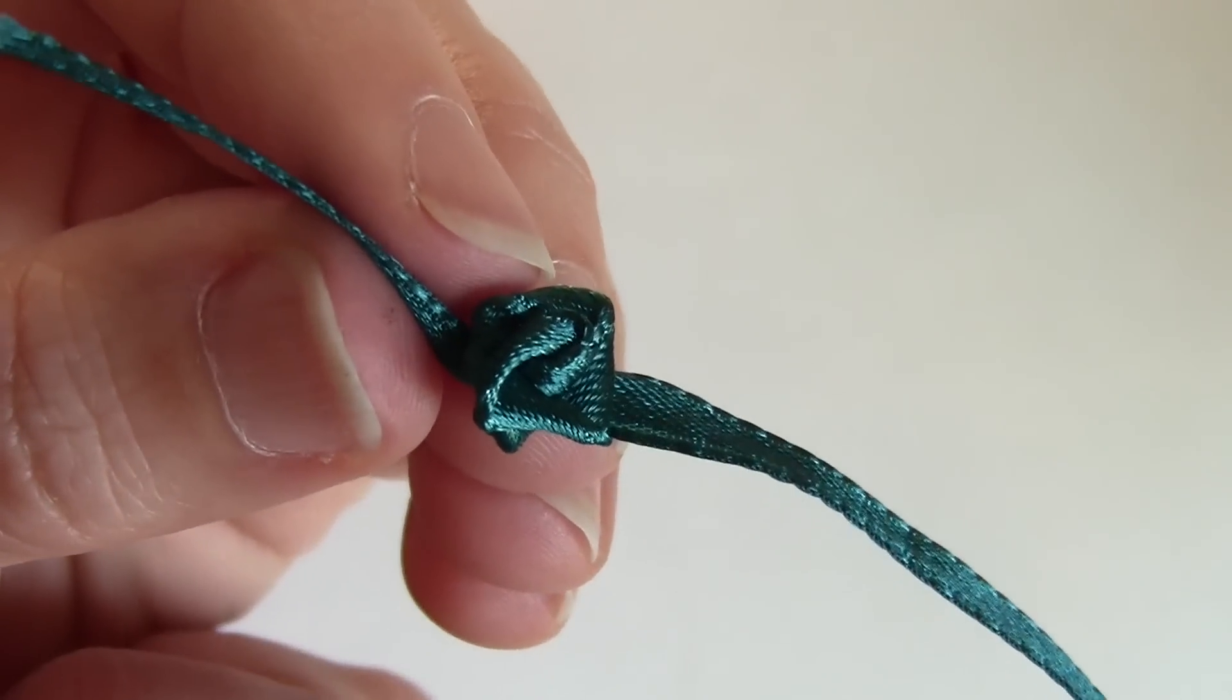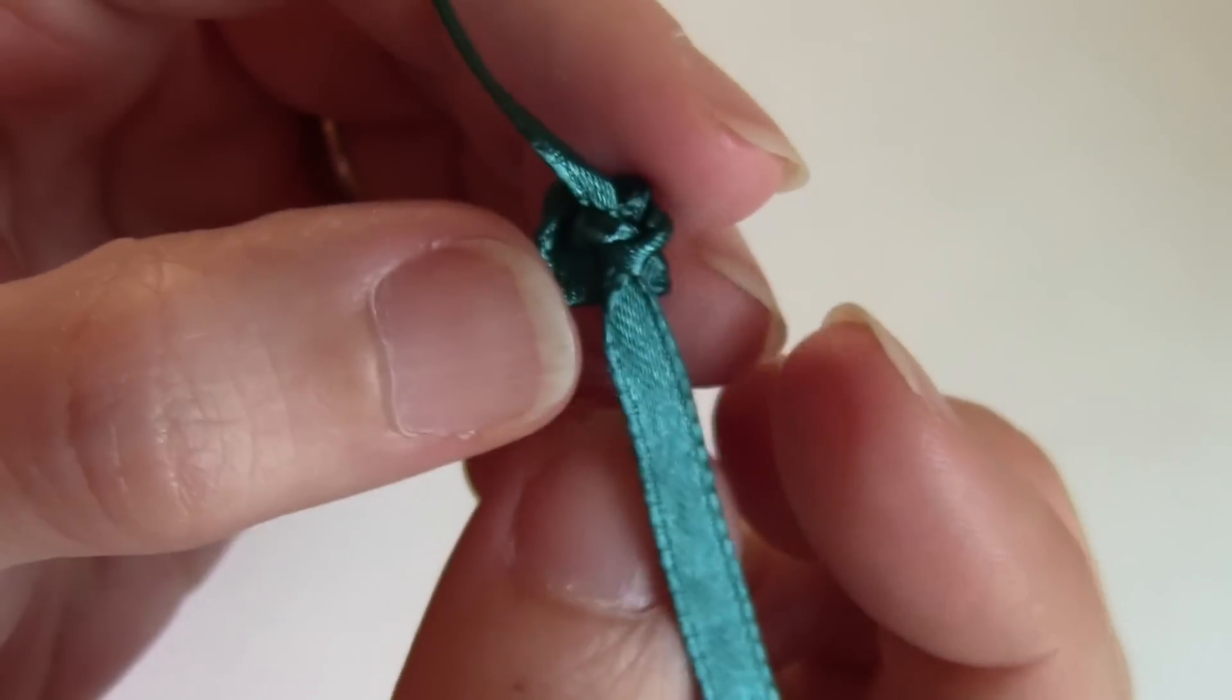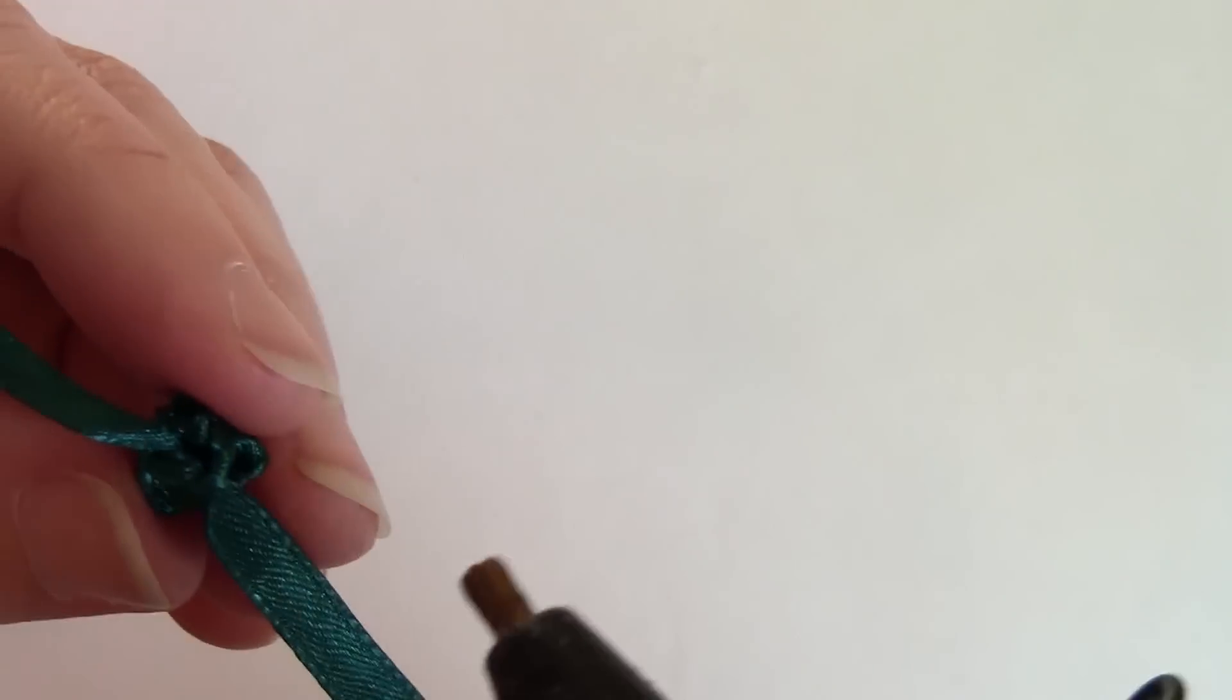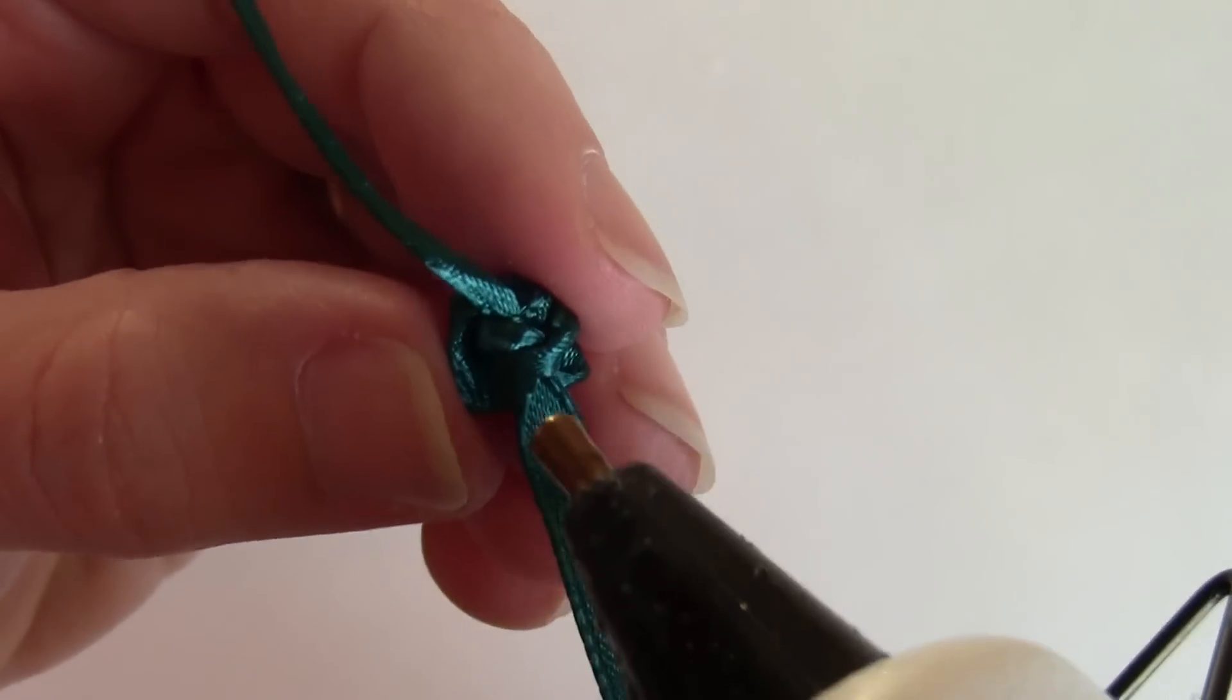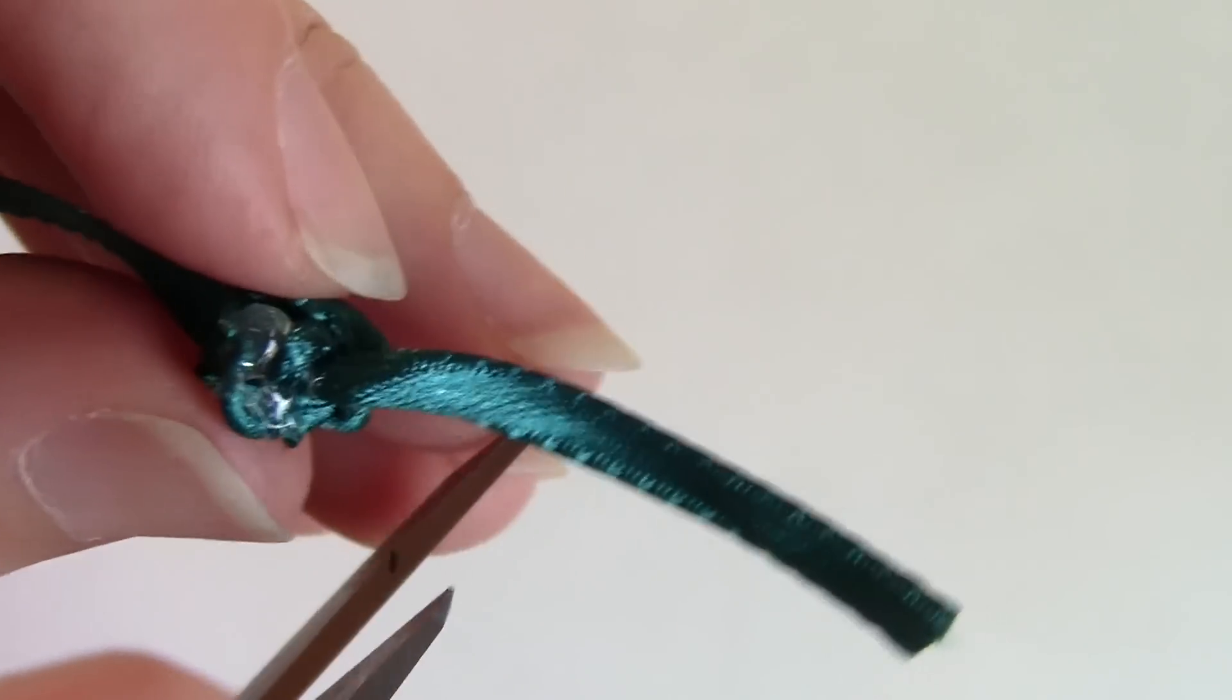We have our little rose, but we have not cut off the ends yet. If you want a little extra security on the back, I would go ahead and just dab a little bit of glue to hold it in place. Once you've done that, go ahead and clip off the ends.